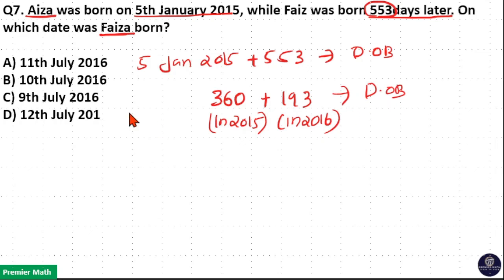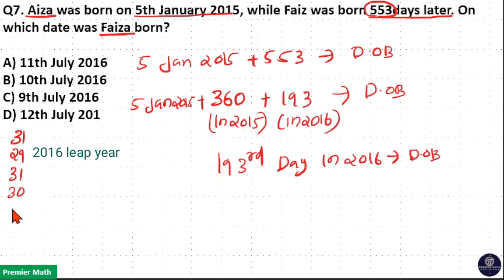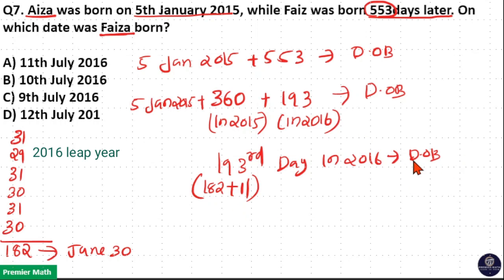So 553 minus 360 gives 193 remaining days, and this is the date of birth. Now the 193rd day in 2016 is the date of birth. 193 days means up to June — 6 months means 6 into 30 is 180, plus 1 plus 1 equals 192 days, which is the end of June, that is June 30th. But here we need the 193rd day, so 192 plus 1 of the next month — July 1st. Wait, 193rd day means July 1st is the start of the next month.